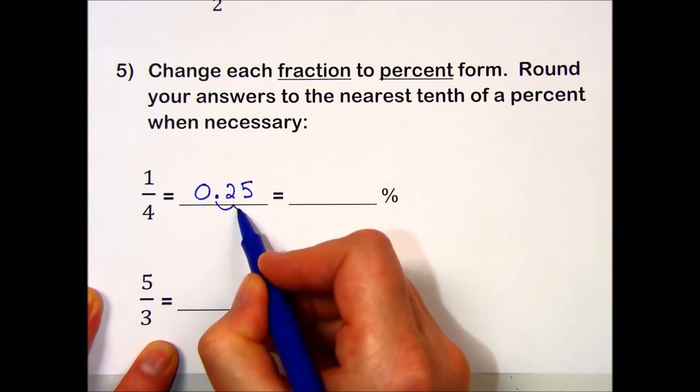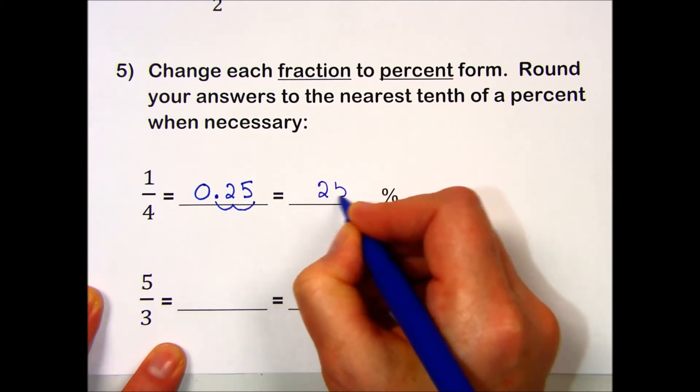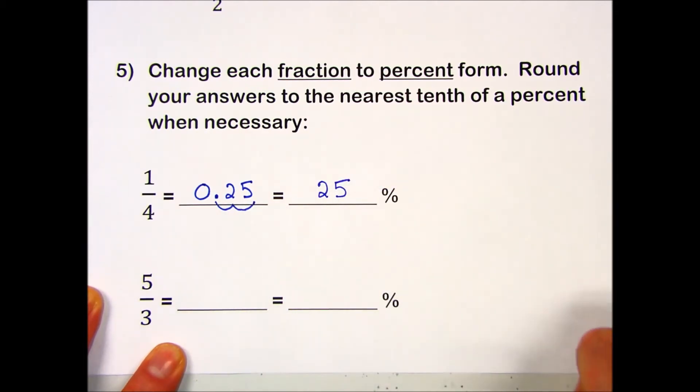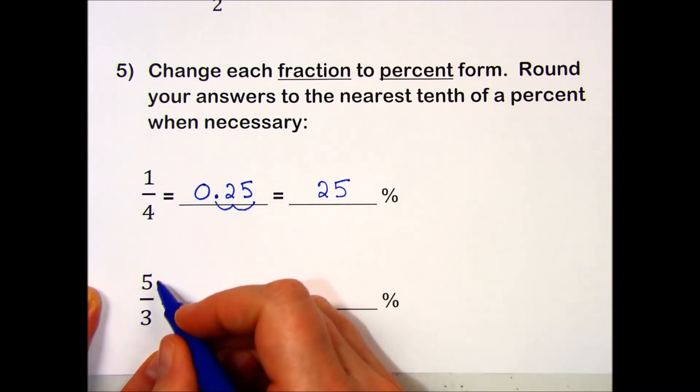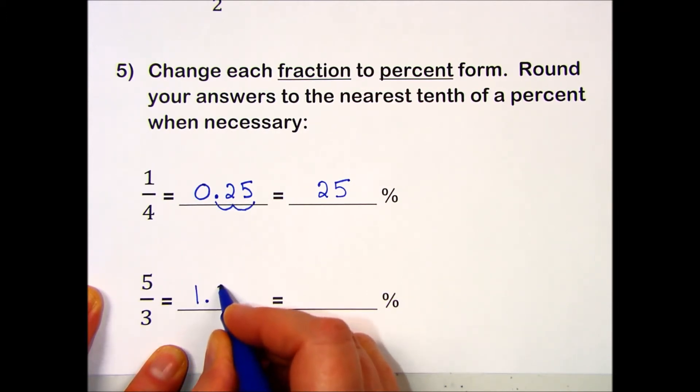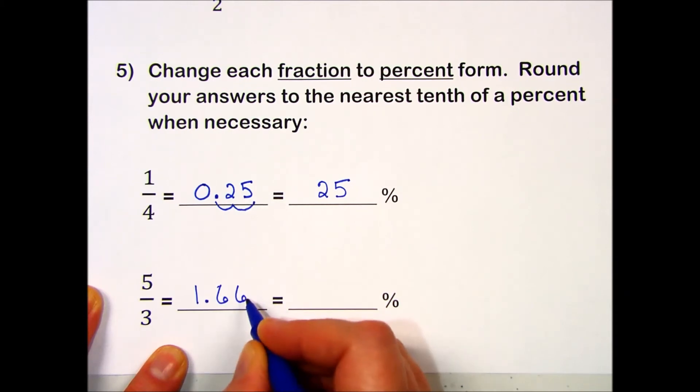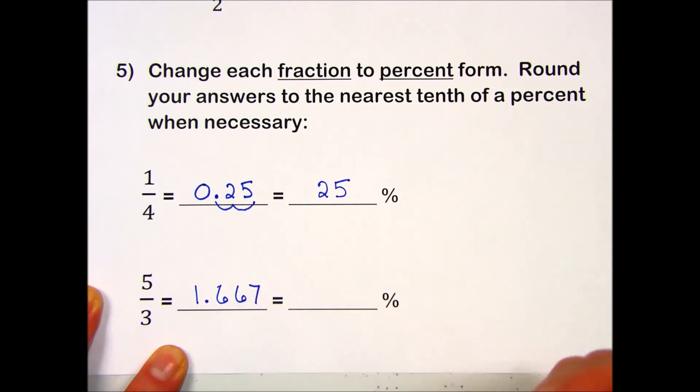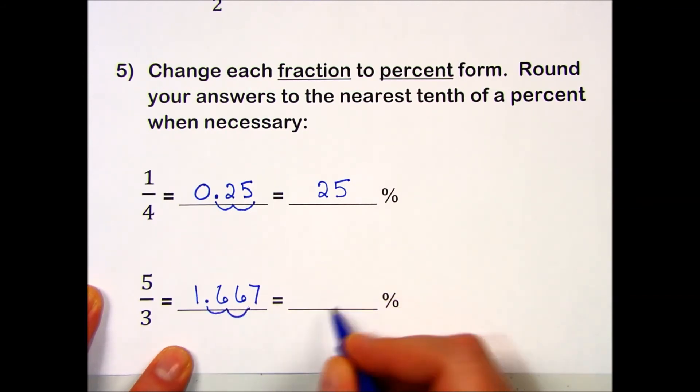Five-thirds on my calculator turned into a decimal. Five divided by three equals 1.66, the sixes are repeating. I'll round off at this point so I have a number that's manageable to write down.